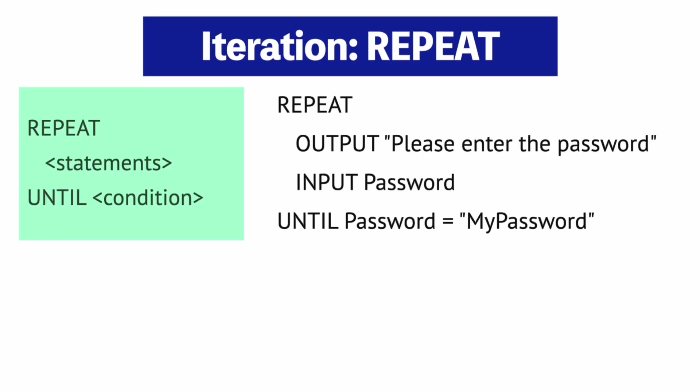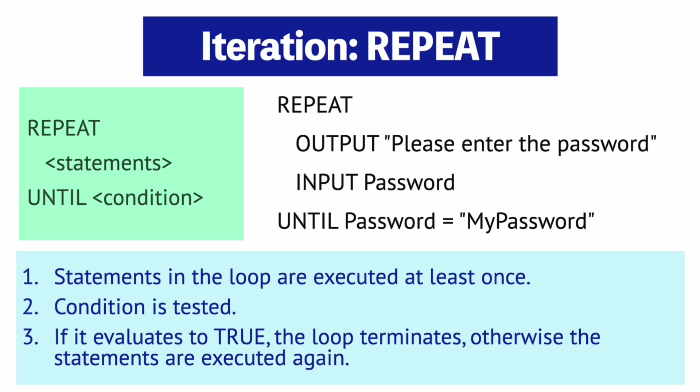For post-condition loops, the REPEAT-UNTIL loop is used. Here's the structure of the loop and an example of it. The statements in the loop must be executed at least once. After that, the condition is tested. If the condition is true, the loop terminates. Otherwise, the statements are executed again. In the example here, the program is requesting for a user to enter their password in order to log in. If they input it but they don't get it right, the statements will be repeated until they do get it right. That's why it's called the REPEAT-UNTIL loop.